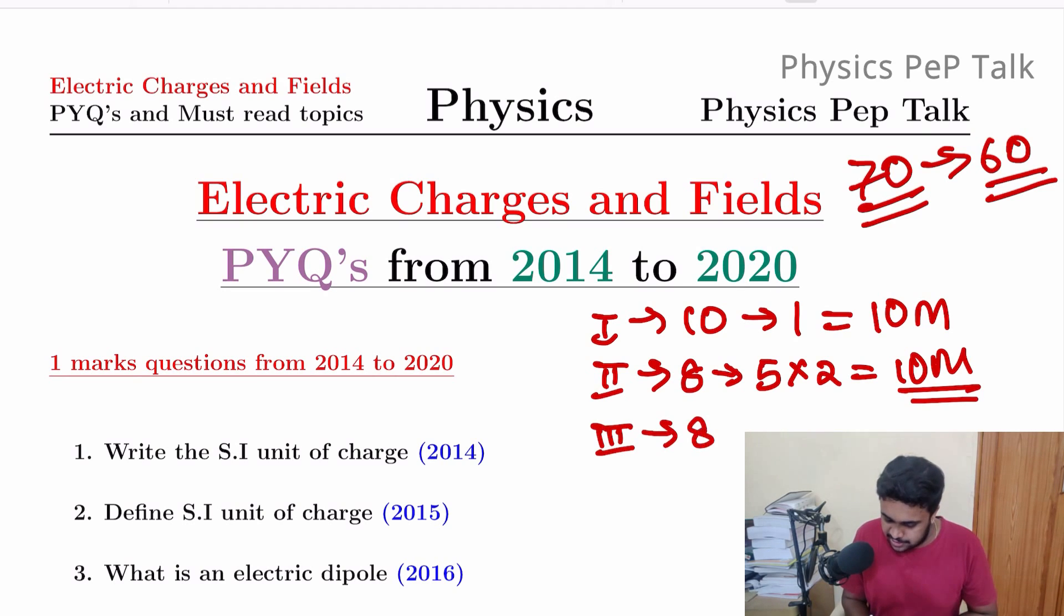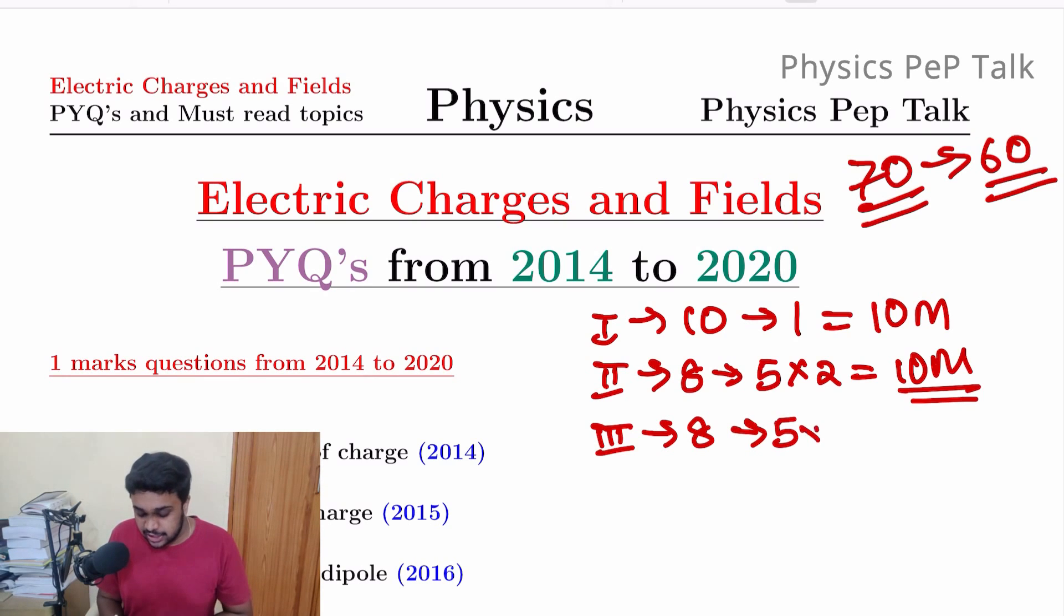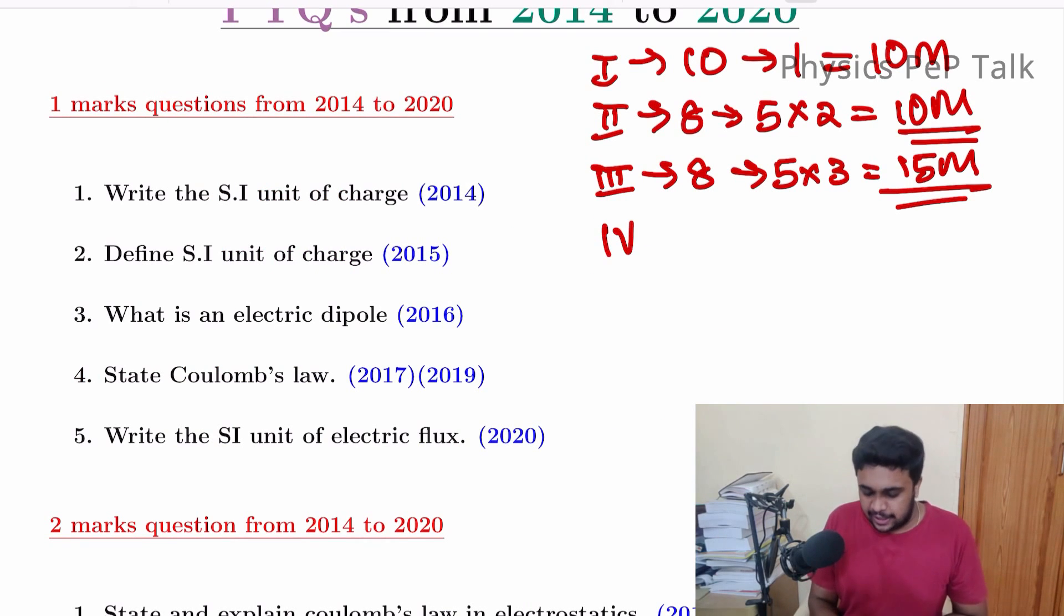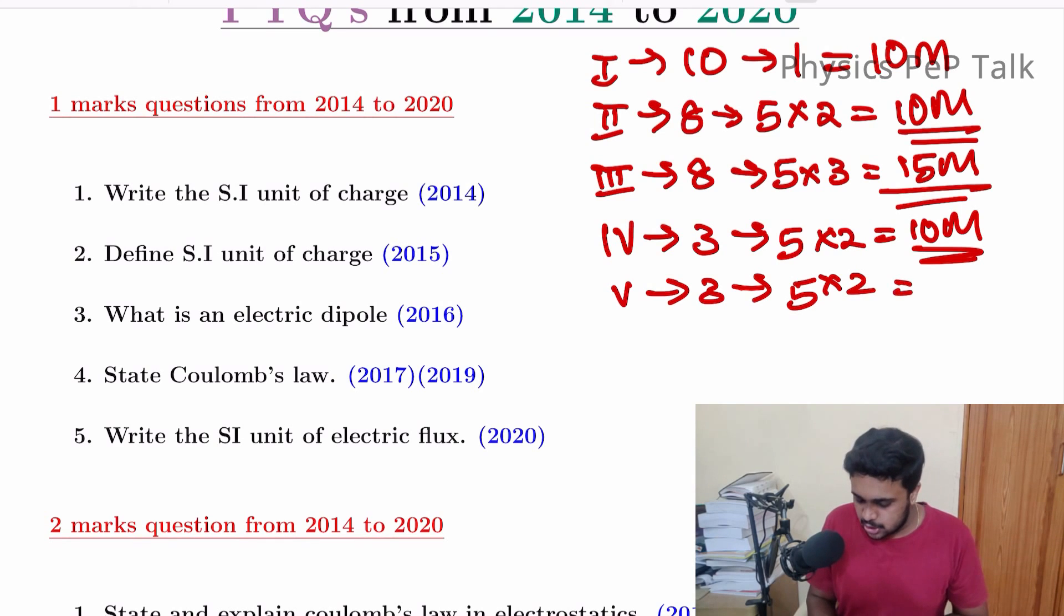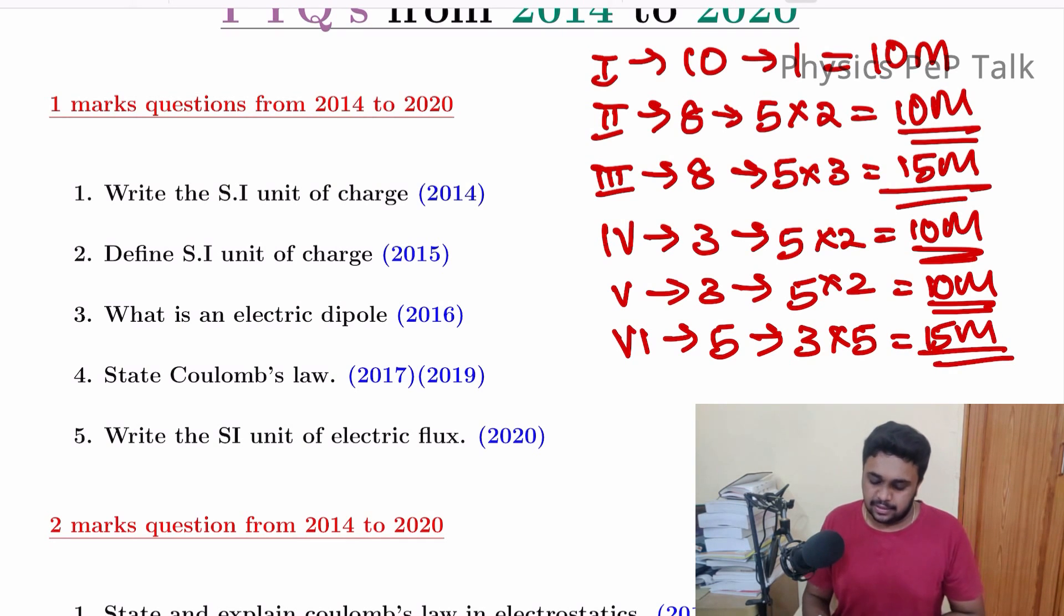Third main, 8 questions, out of which you have to solve only 5. Each question carry 3 marks, so total 15 marks. Fourth main, 3 questions, you have to solve only 2. Each question carry 5 marks, so total 10 marks. Similarly, fifth main, 3 questions, out of which you solve 2. Each question carry 5 marks, total 10 marks. In the sixth main, you have to solve only 3. Each problem carries 5 marks, so total 15 marks. Total add 10, 20, 35, 45, 55, and 70 marks.